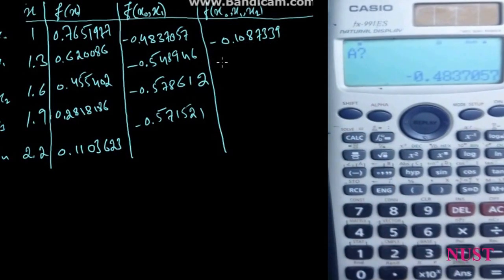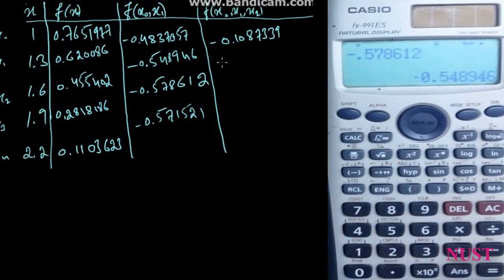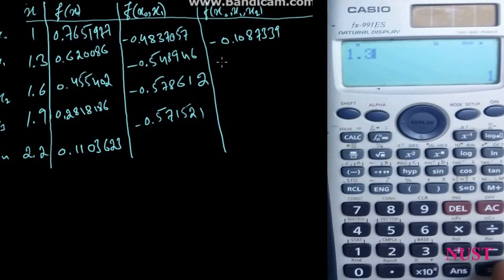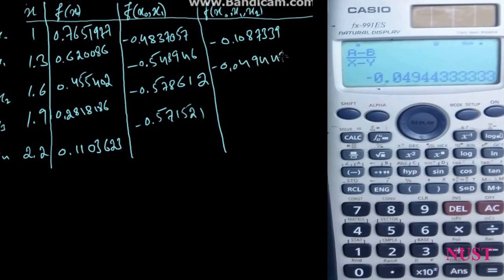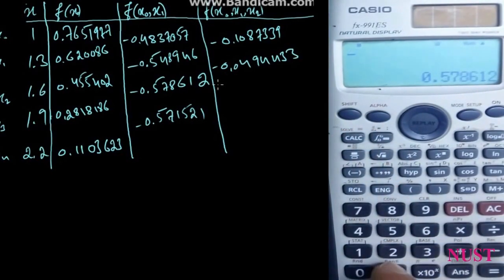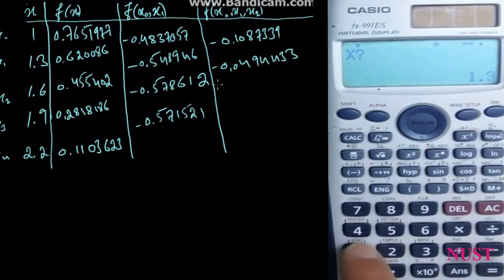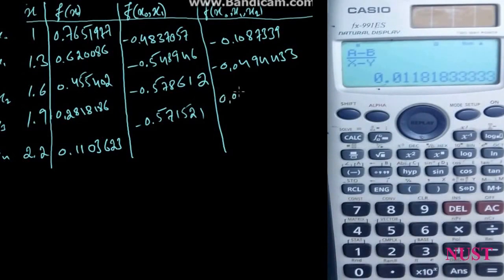Again press Scale C. Enter for A: minus 0.548946, and for B: minus 0.578612. For X enter 1.9 and for Y enter 1.9. Then press Scale C again; enter minus 0.578612 for A and minus 0.571521 for B. Enter 1.6 for X and 2.2 for Y. We get 0.0118183.